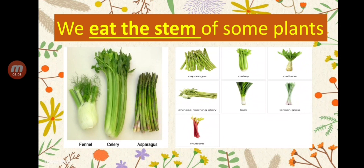We can also eat the stem of lemongrass, Chinese morning glory, and rhubarb. All of these plants are examples of plants that we can eat their stems.